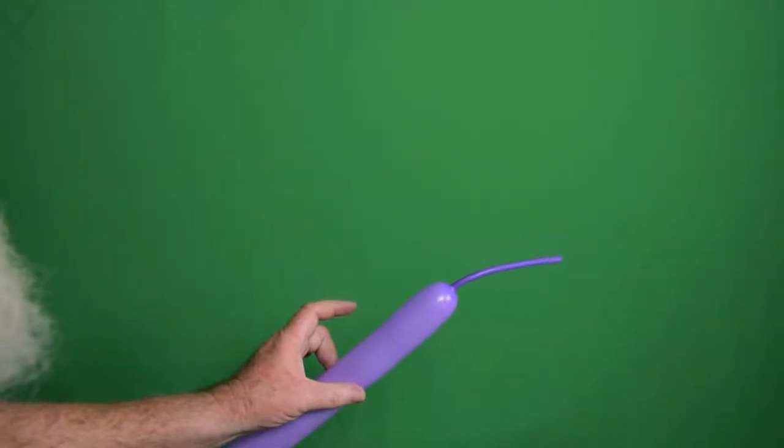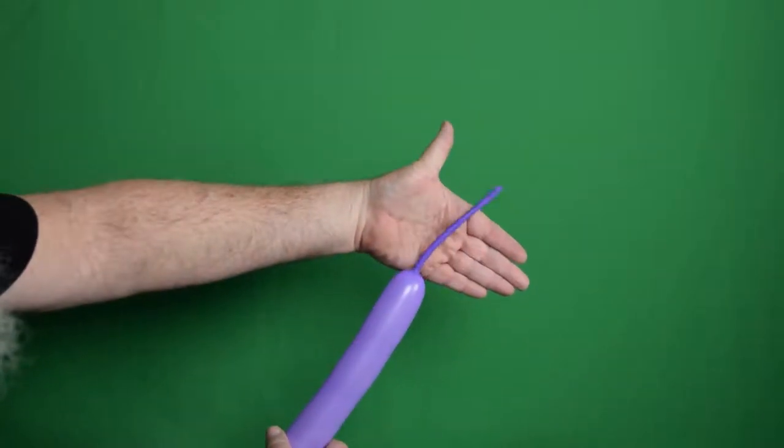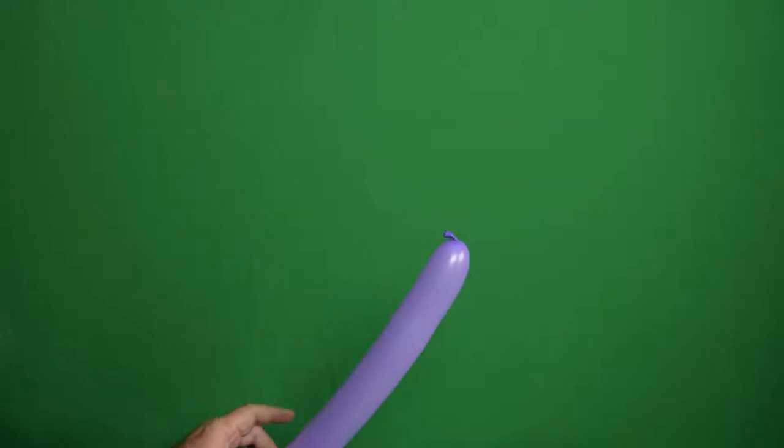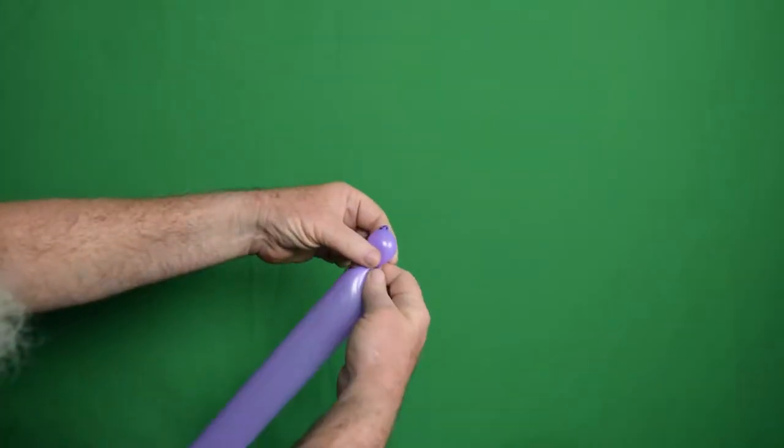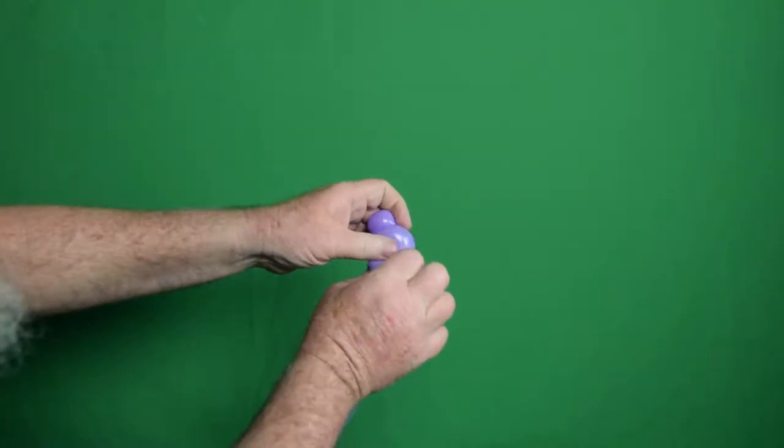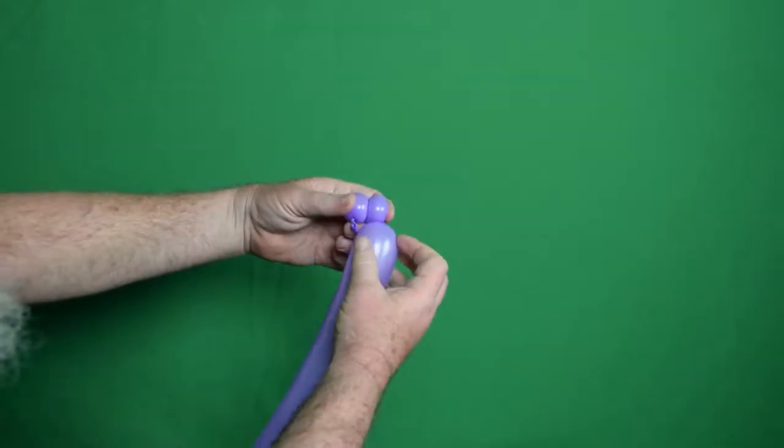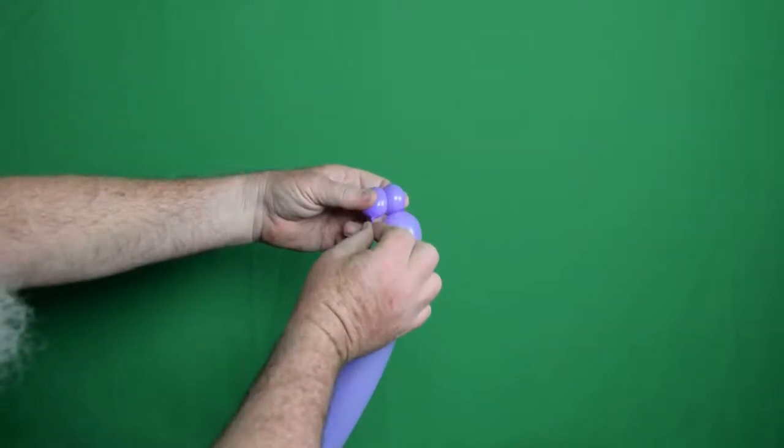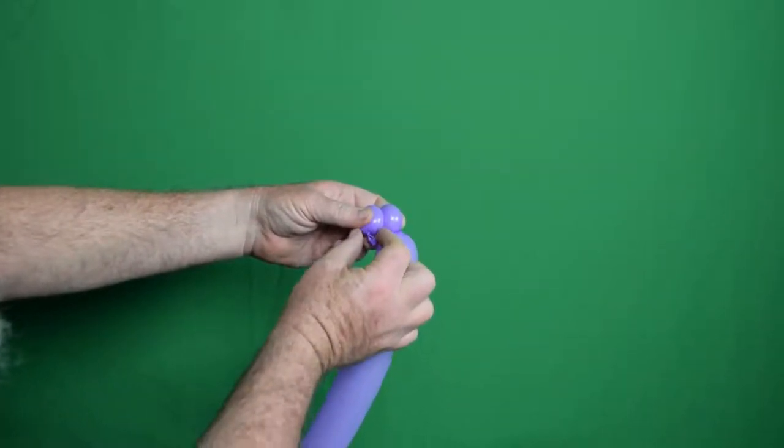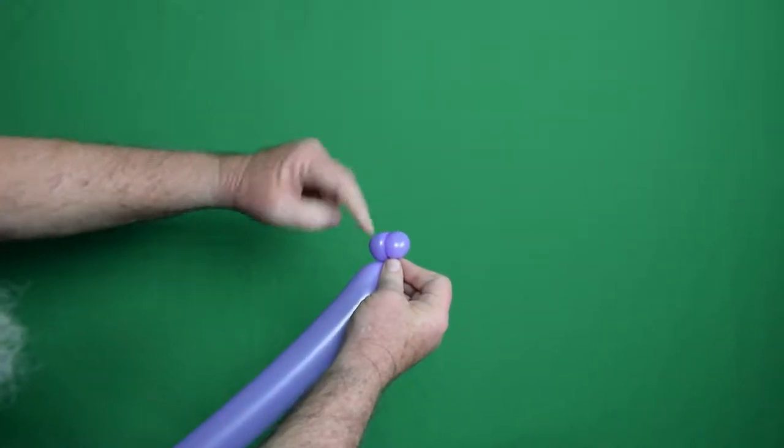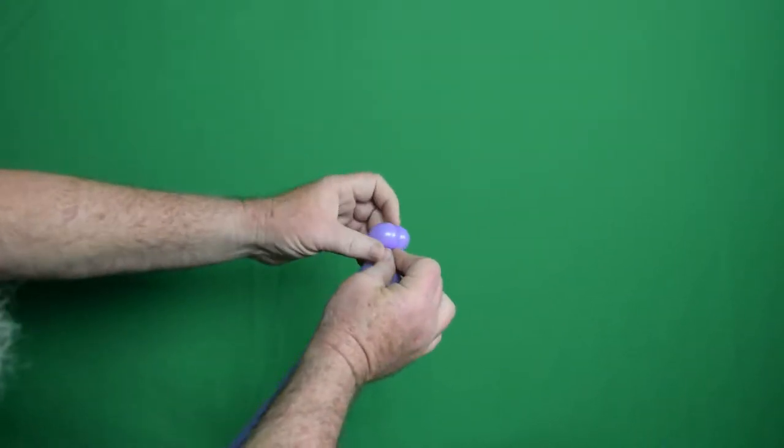For our quick and easy one balloon horse, I've got a single 260, and I've blown it up with about a hand and a half uninflated. You're going to come to the end of it, and I'm going to make a small round bubble, followed by another small round bubble. See how those are quite small, just a little more than a finger. Then I'm going to grab this end here, but don't grab the tail. You want to grab the knot. So grab the knot, pull it to the base of that twist, and then twist these two around a couple times.